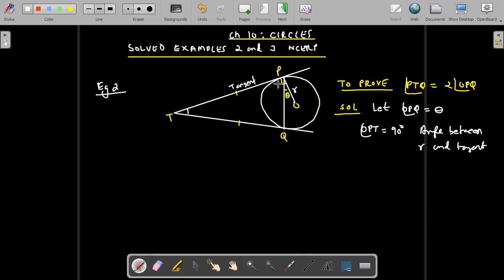Now if this is 90 and this is theta, the remaining angle here is going to be 90 minus theta, right? So angle QPT will be 90 minus theta. Now this is 90 minus theta.